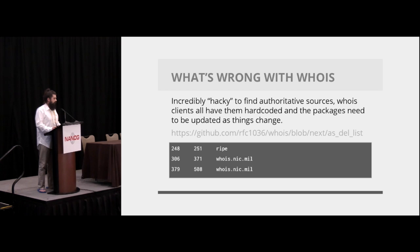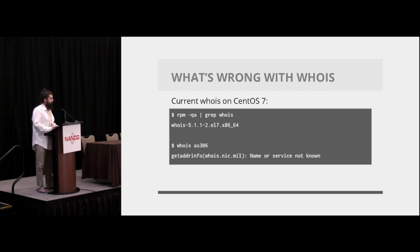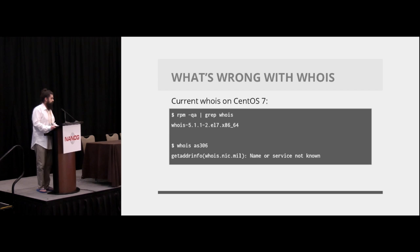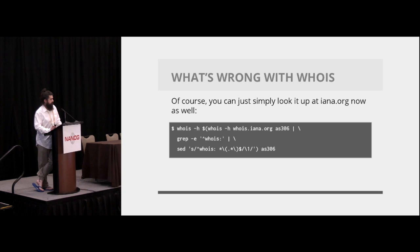Which brings us to the WHOIS clients. Originally, before our WHOIS, this was a text file. In my example there are three ASNs that go to RIPE, and then 306 to 371 go to nick.mil. Well, nick.mil no longer exists and it's handled by ARIN now. So on a modern current install of CentOS, if you try to WHOIS AS306, nick.mil doesn't exist, so you get nothing. Those of us who use WHOIS every day probably have a bash RC file filled with functions that do things like this — it's not impossible but it's certainly not the way we want to go forward.